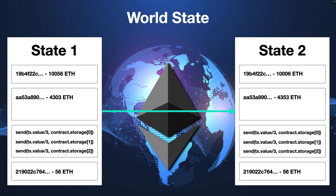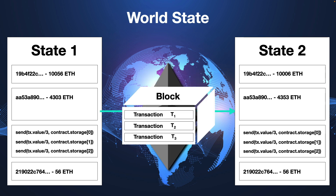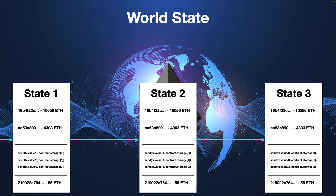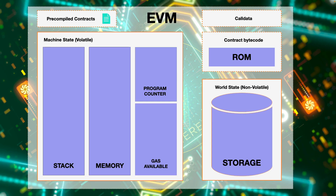Ethereum is a transaction-based state machine responsible for constantly changing the world's globally accessible state — meaning all of the accounts that exist on Ethereum, how much money they own, and who owns what at any given point in time. Every time a transaction gets submitted to Ethereum for processing, the world state changes from the previous state to the new state. All of the state changes get packaged into blocks, which are really packages of transactions — that's why we call it a blockchain.